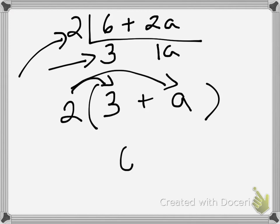2 times 3 is 6. 2 times a is 2a. And now I'm right back to the original. Let's do another example.